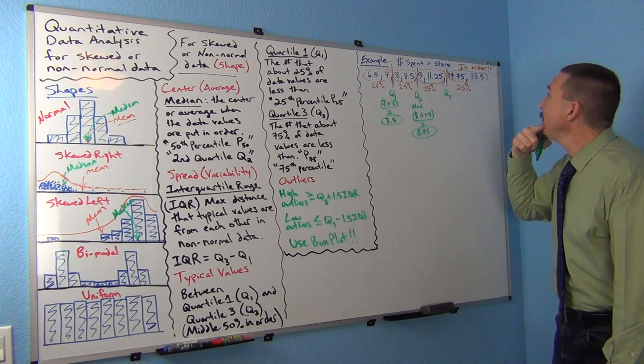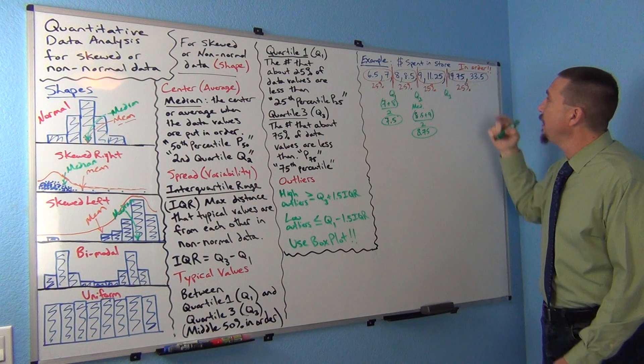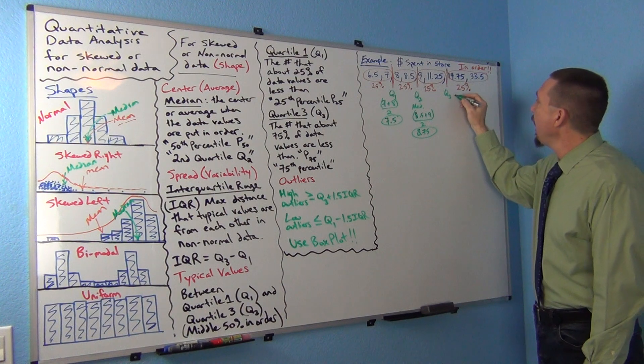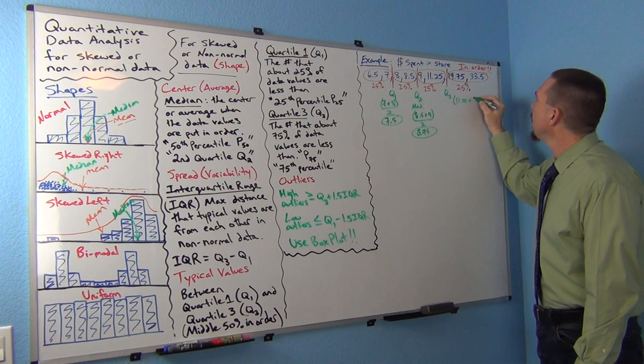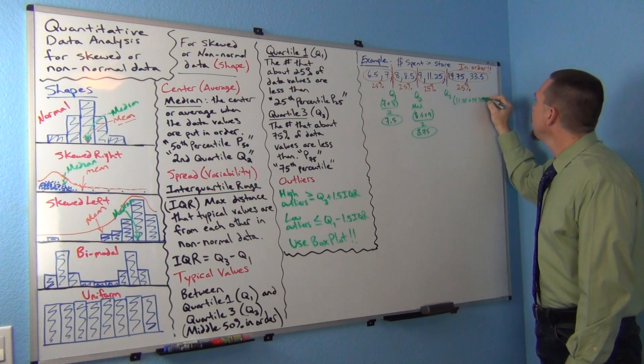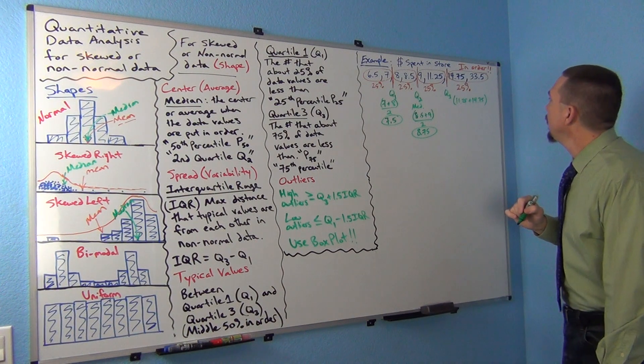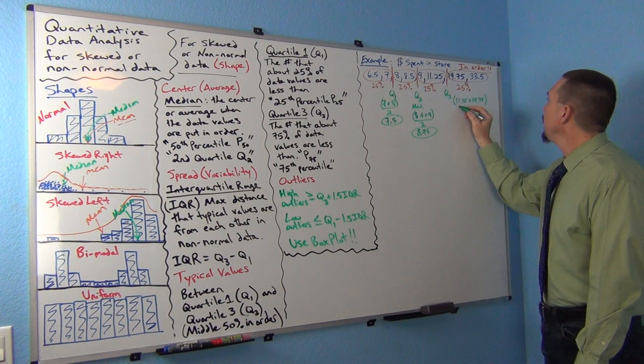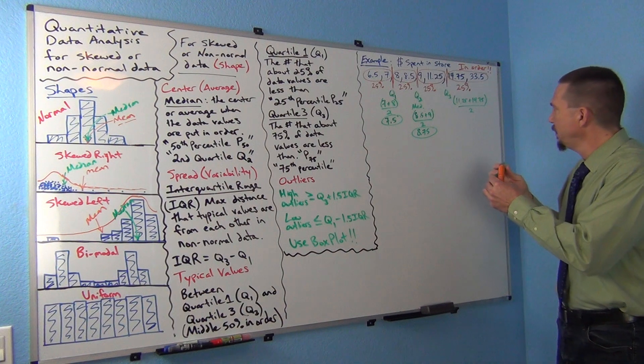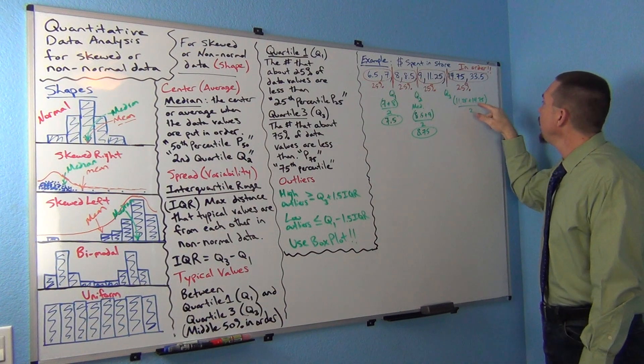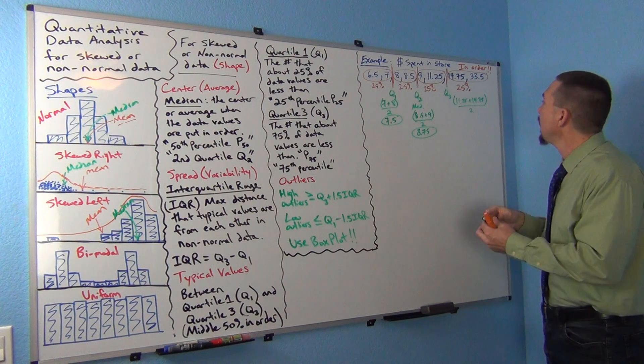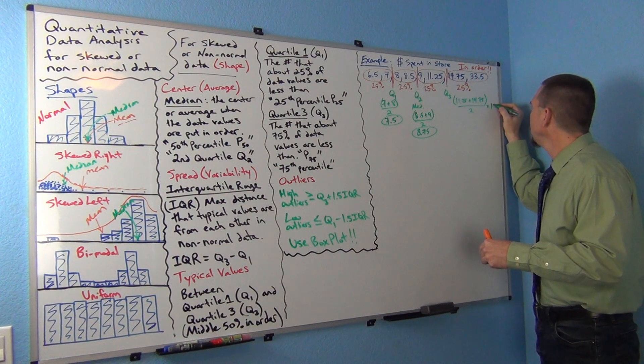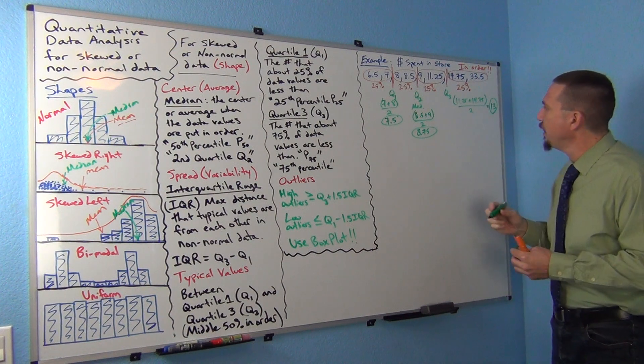What about this one? This one might be a little tougher. I don't know what 11.25 halfway between these two is. So I'll add them: 11.25 plus 14.75. That's 26. And then divide by two. 26 divided by two is 13. That would be my quartile three.